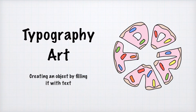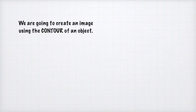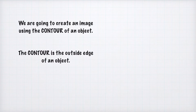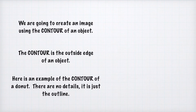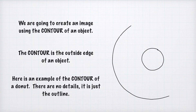Today we are going to learn about typography art. Typography art creates an object by filling it in with text. We are going to create an image using the contour of an object. The contour is the outside edge of an object, so not the inside details. Here is an example of the contour of a doughnut — there are no details, it is just the outline.